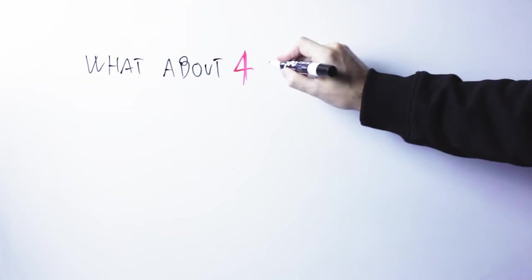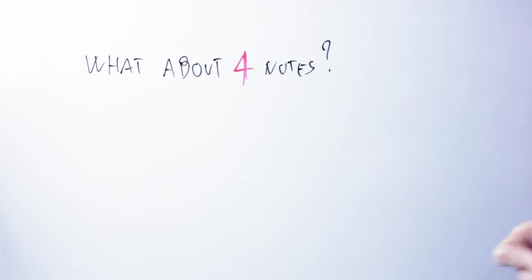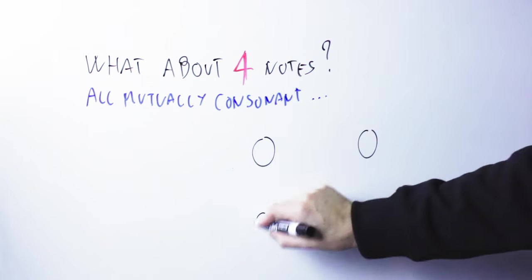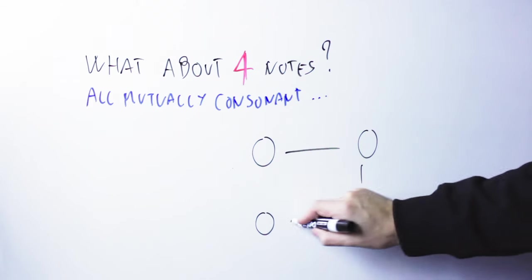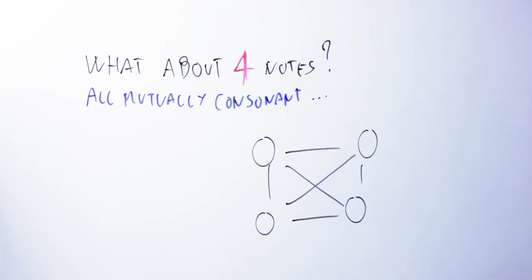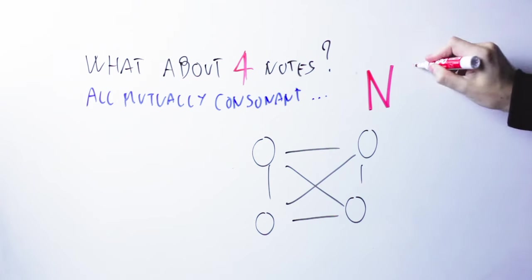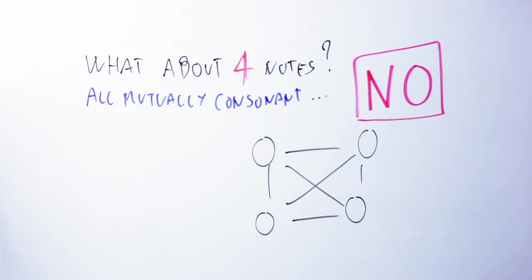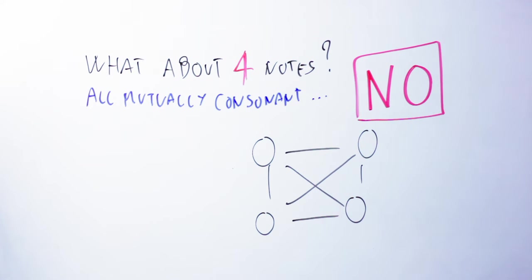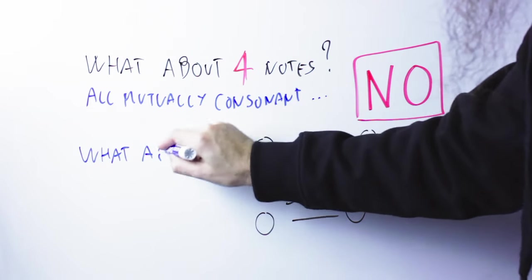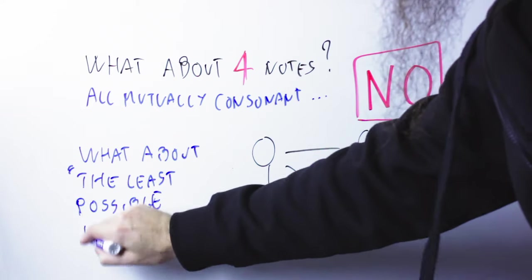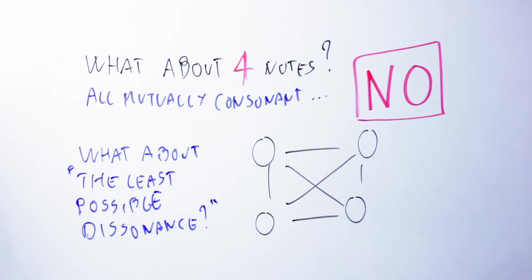Let's instead ask the next question. Can I choose four notes so that all those notes are mutually consonant? So, if I have four notes, now I have a lot more relationships. I have one, two, three, four, five, six relationships between four notes. Turns out, it is not possible to pick four notes so that all those relationships are consonant. There is always at least one dissonant relationship. If you don't believe me, try. I'll see you guys in a couple of weeks.